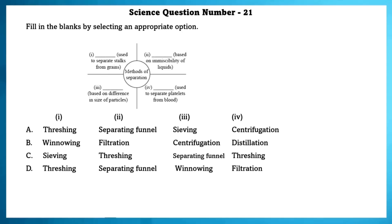Science question number 21. Fill in the blanks by selecting an appropriate option. Threshing is used to separate stalks from grains. Separating funnel is based on immiscibility of liquids. Threshing is based on difference in size of particles, while centrifugation is used to separate platelets from blood.